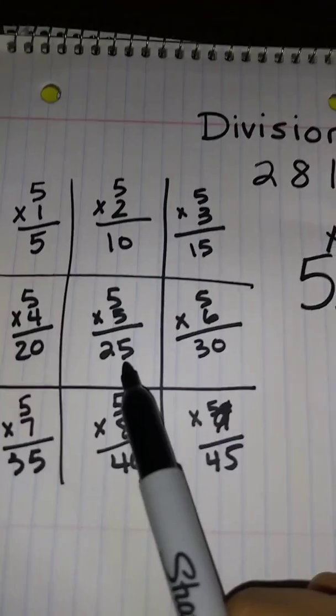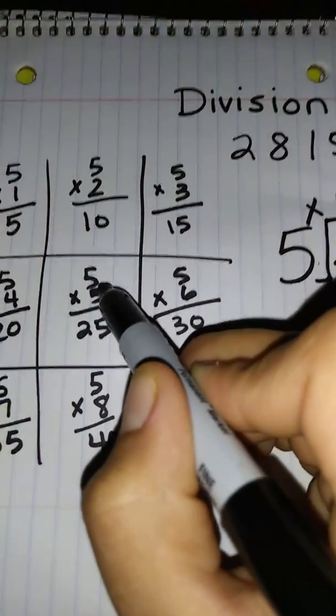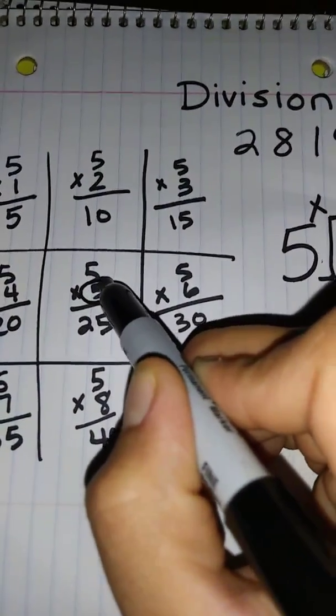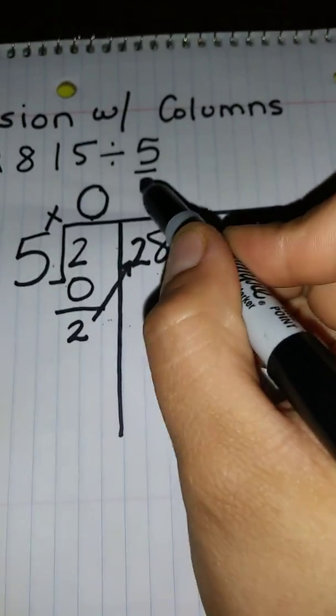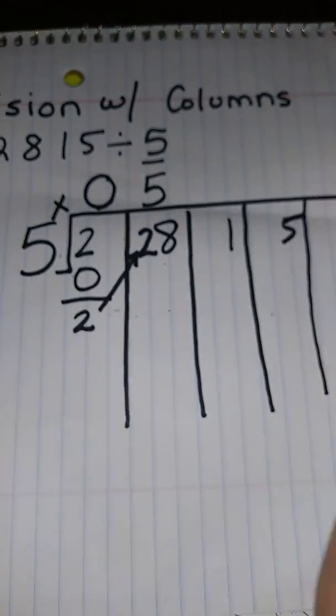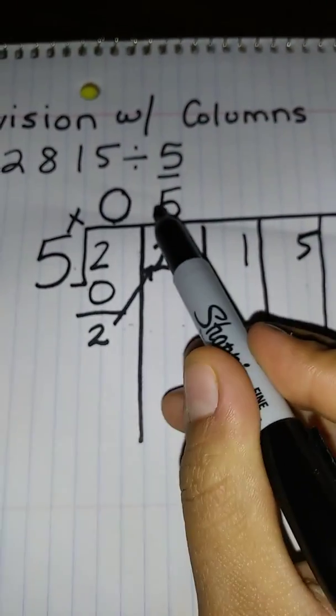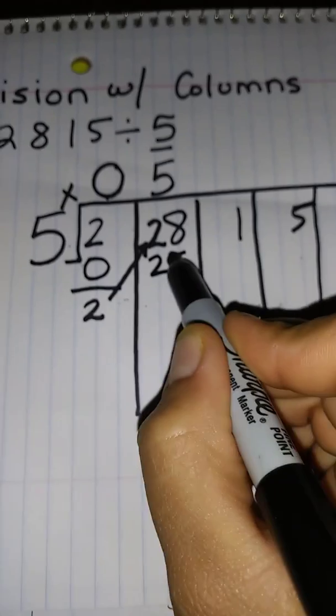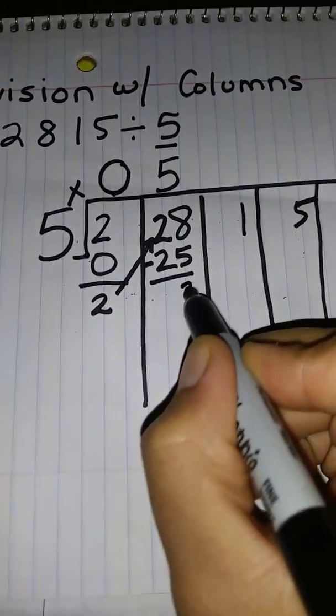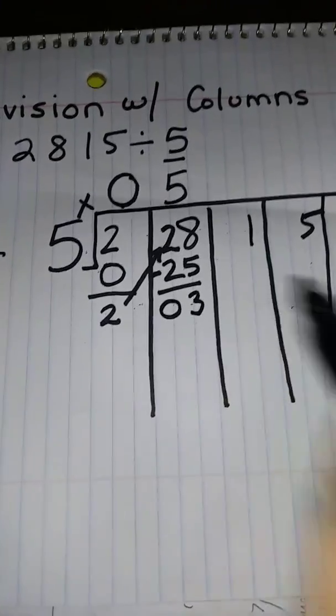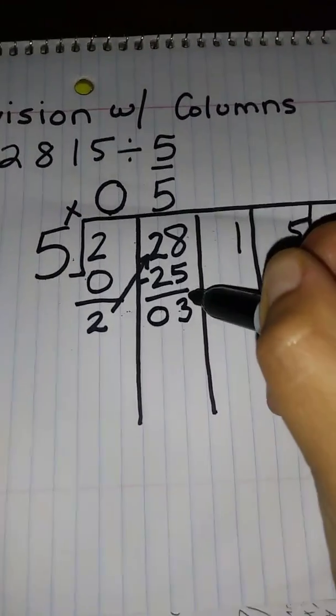30 we went over. So I can multiply 5 into the number 28 five times. Not perfectly but close enough. So I'm going to put the 5 on top. 5 times 5 is 25. The difference being 3. I'm going to go ahead and bring him over.